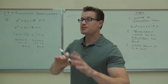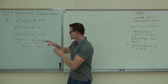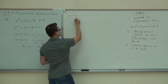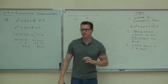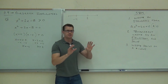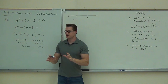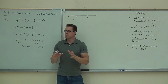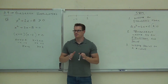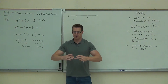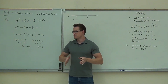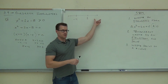The number line doesn't need to be to scale or have a zero, but the values must be in the correct order. Negative four comes first, then two. Think of it like slicing a loaf of bread — if you cut it twice, you get three pieces. So two cut points on the number line give you three intervals.